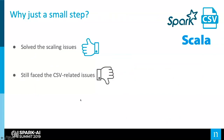So why is this just a small step? It obviously solves the scaling issues — we know Spark is scalable — but we still faced those CSV-related issues, and mainly the fact that we couldn't enforce a schema on the producer of the files.